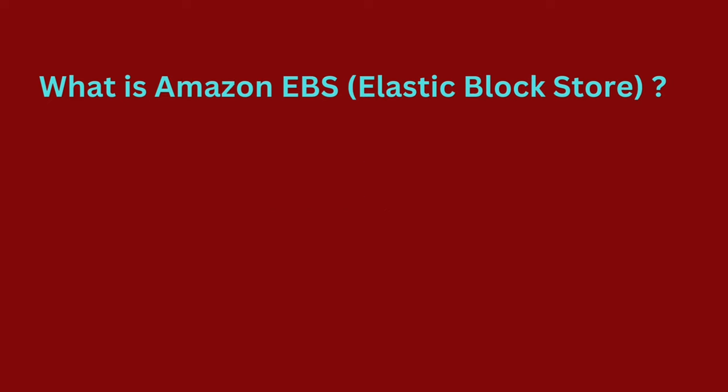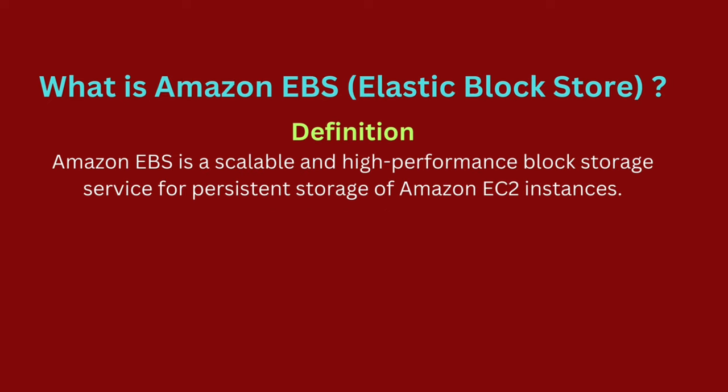Amazon EBS, called Elastic Block Store, is a service that offers reliable and fast storage for your data when using Amazon EC2 instances. Your data remains safe and available even if your EC2 instance stops working. This is perfect for applications that need to update data often and access it quickly.